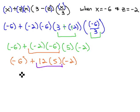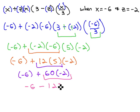Continuing to multiply, negative 6, plus 60, times negative 2. And finally, multiplying, negative 6, minus 120.